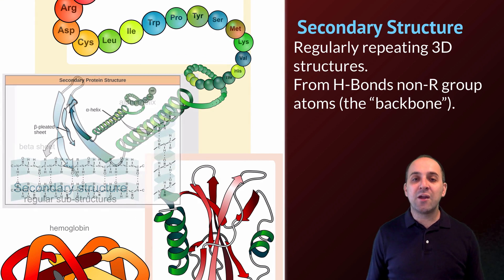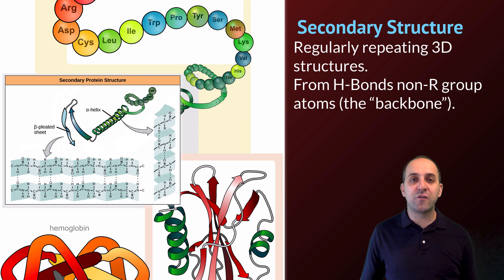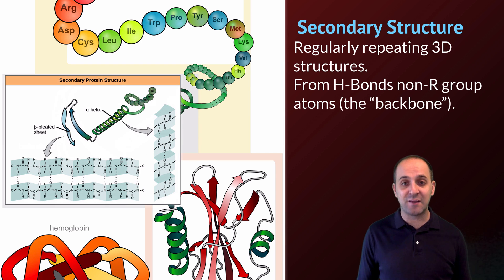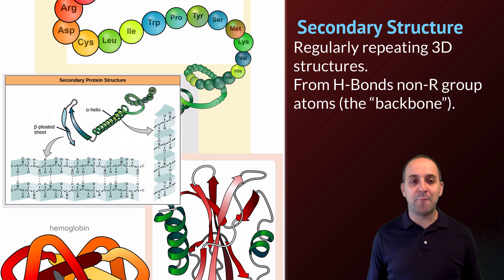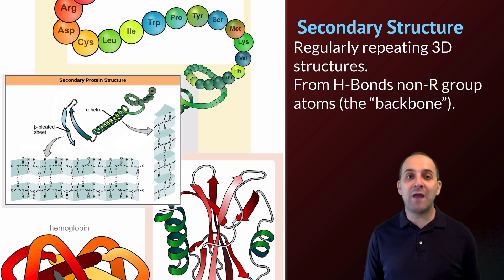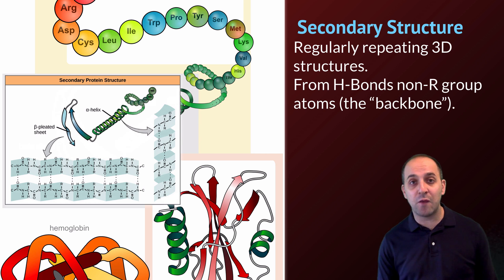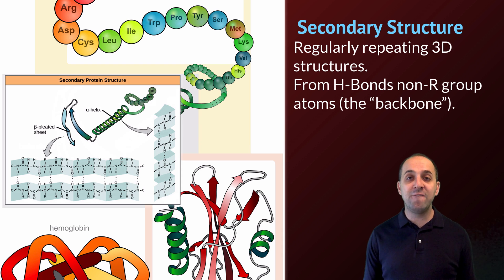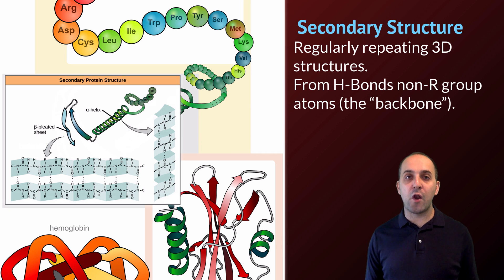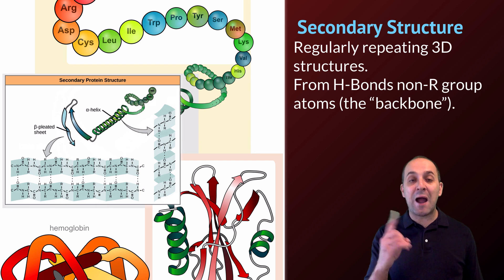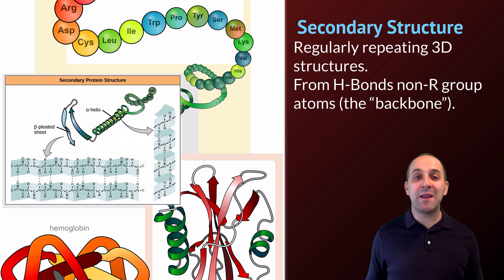Secondary structure is the regularly repeating three-dimensional structures that start to arise when we put amino acids together. These come from hydrogen bonds in the non-R group atoms — the backbone of the polypeptide chain. Hydrogen bonds form between the hydrogens on the amino groups and the double-bonded oxygens in what used to be the carboxyl groups, causing the polypeptide chain to form regularly repeating three-dimensional structures. These structures are largely universal in all proteins. The image shows two of the most common ones: alpha helices, which are spirals of amino acids, and the beta pleated sheet structure.